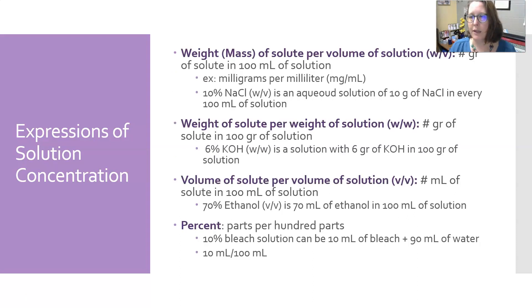There's a lot of different ways to express that depending on the two components, the solute and the solvent. You have the weight or mass of solute per volume of solution, designated as W over V. It's the number of grams of a solute in 100 mL of a solution, which implies a liquid. A concentration, for example, milligrams per milliliter or per deciliter - that's a concentration of a lot of different things that we measure in blood. For example, 10% sodium chloride (W/V) is an aqueous solution of 10 grams of sodium chloride in every 100 mL of solution - 10 grams of salt in every 100 mL of water.